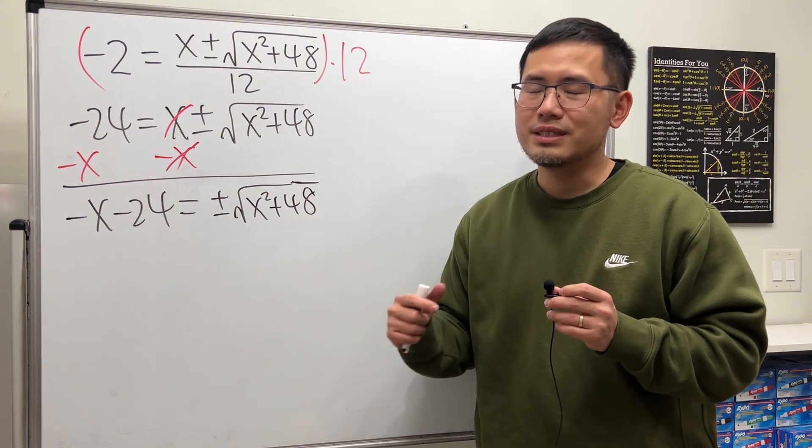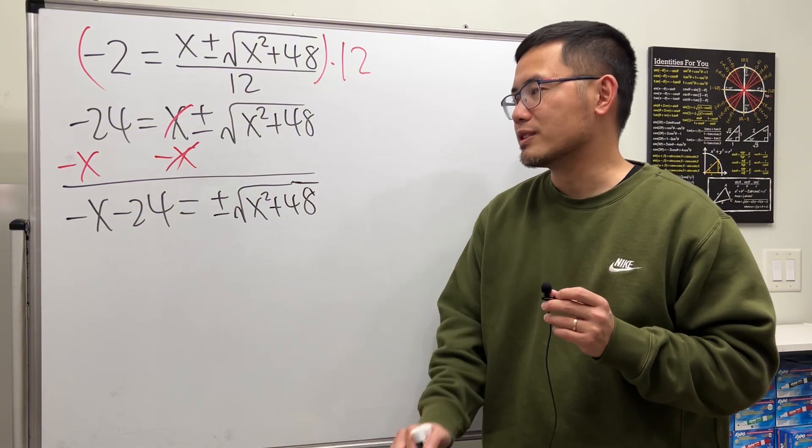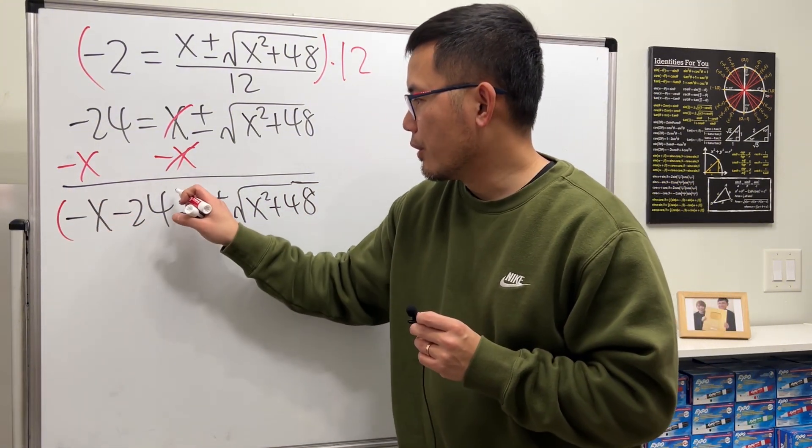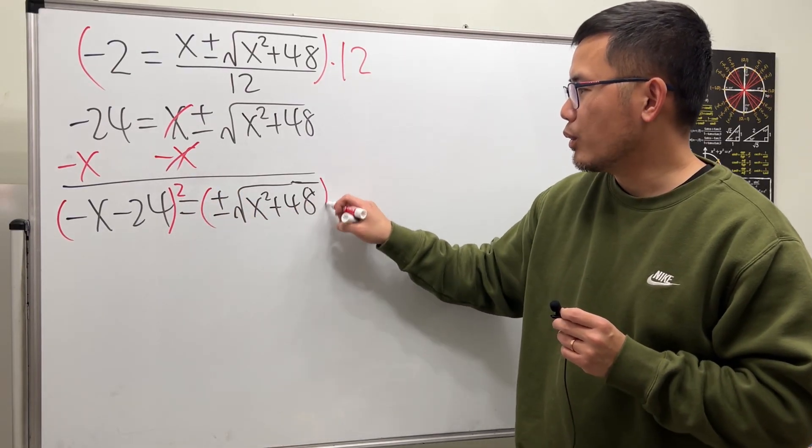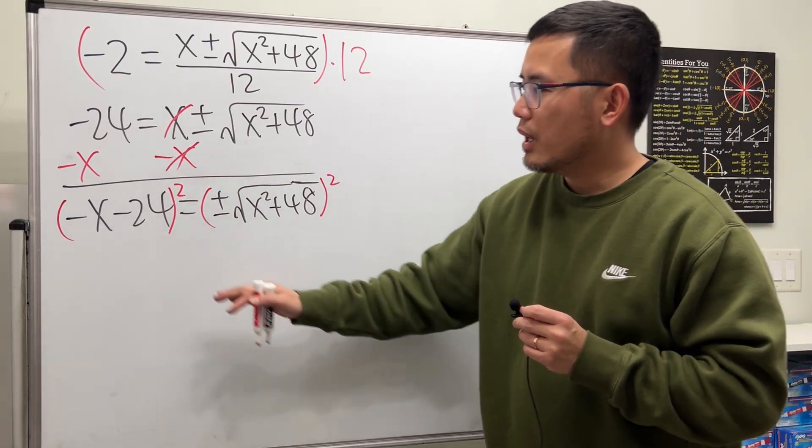Now, I want to get rid of the square root, and we can do that by squaring both sides. So put the whole thing right here, square that, likewise the whole thing right here, square that.